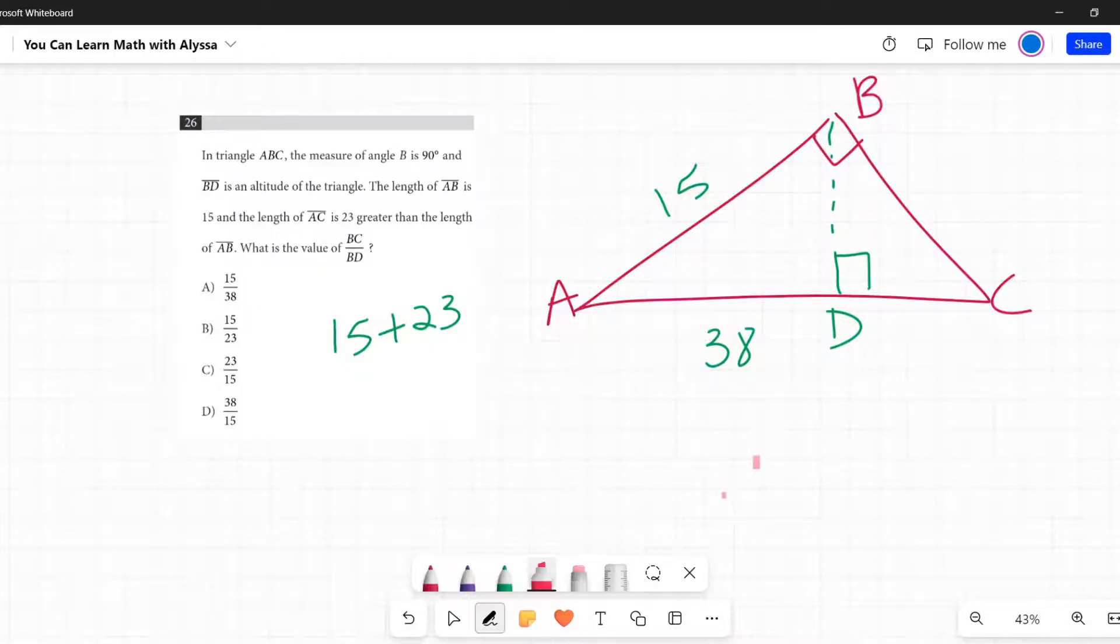And two of them, ABC and BDC, have the right angle. Well, all three of them actually have a right angle in them. So there's a potential for similar triangles all over the place because we have shared angles.